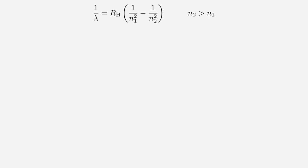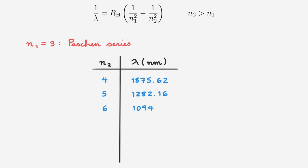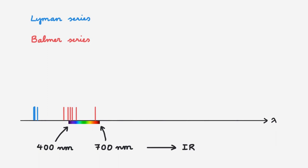The next spectral series corresponds to N1 equals 3, and it's called the Paschen series, named after Friedrich Paschen, who discovered it in 1908. Going straight to the table and filling in the first few lines of the series all the way to the limiting line, and going back to our picture of the electromagnetic spectrum — now zoomed out to fit the new series — the Paschen series starts at around 1880 nanometers and terminates at around 820 nanometers. This places the entire Paschen series within the infrared region of the electromagnetic spectrum.